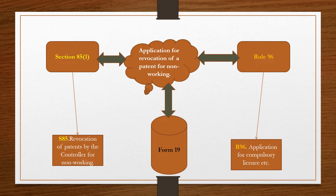Section 85 has the title Revocation of Patents by the Controller for Non-Working. Rule 96 says Application for Compulsory License, etc. We can establish the relations between the section, the corresponding rule, and form 19. The keyword here is revocation. This can also be related to compulsory license, because a compulsory license happens when a patent is in a non-working condition for a certain period — then compulsorily a license is given to another party.